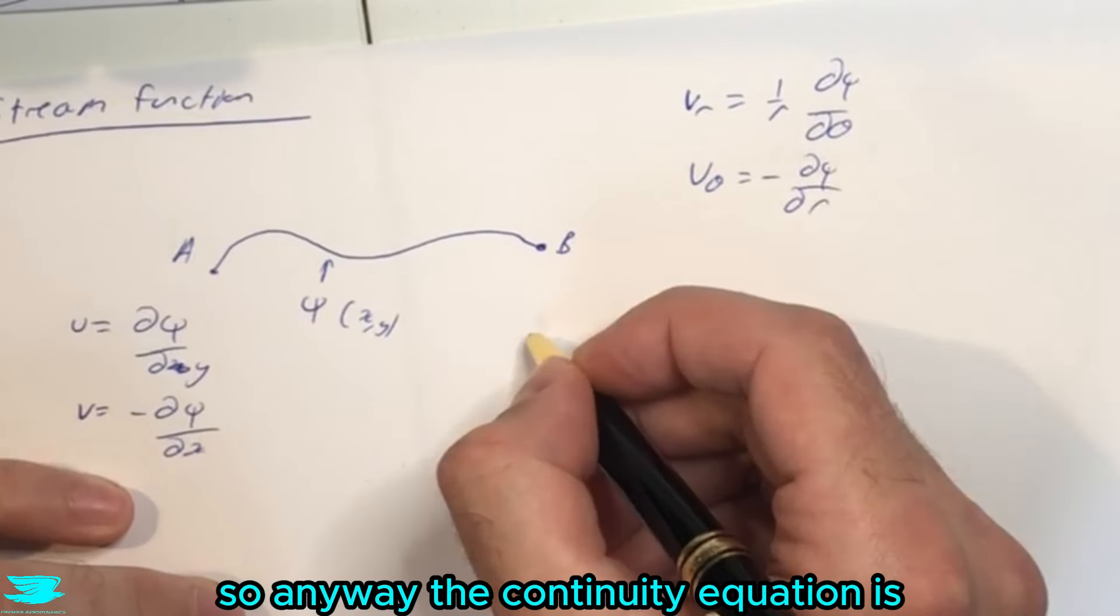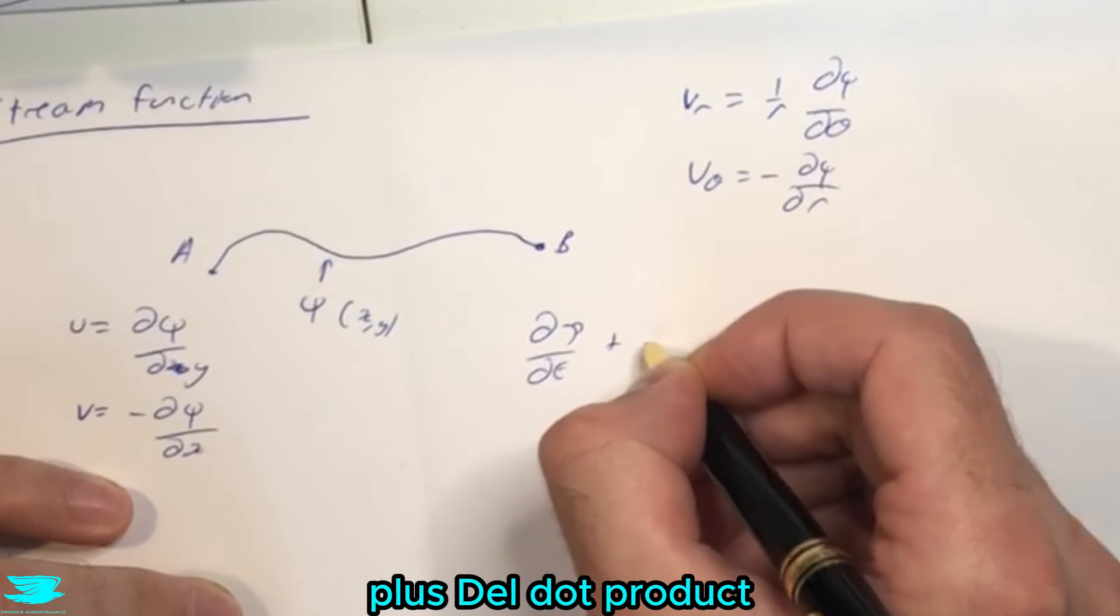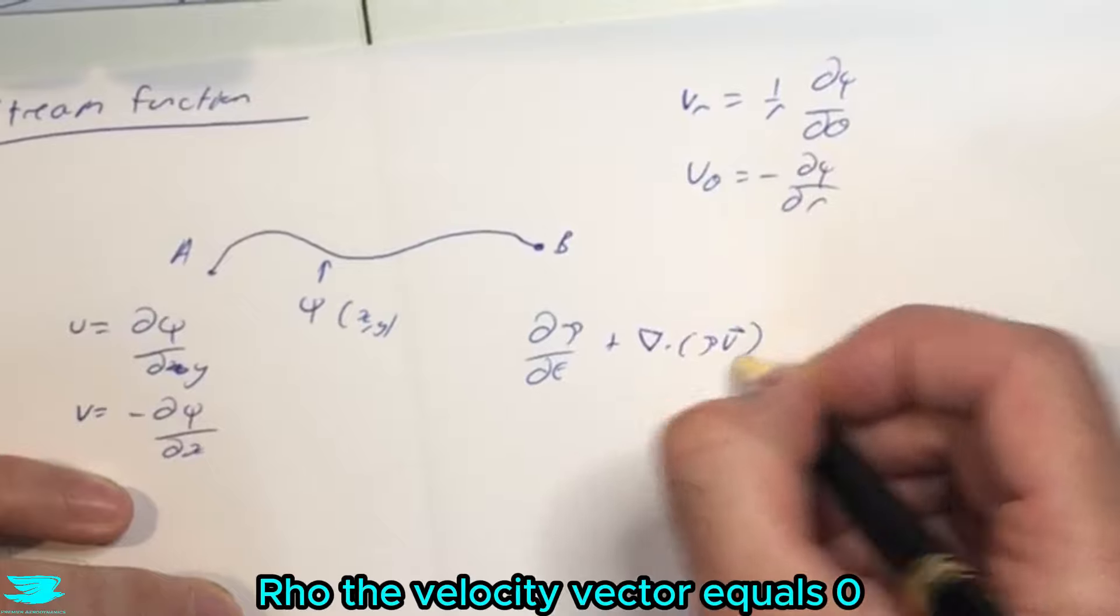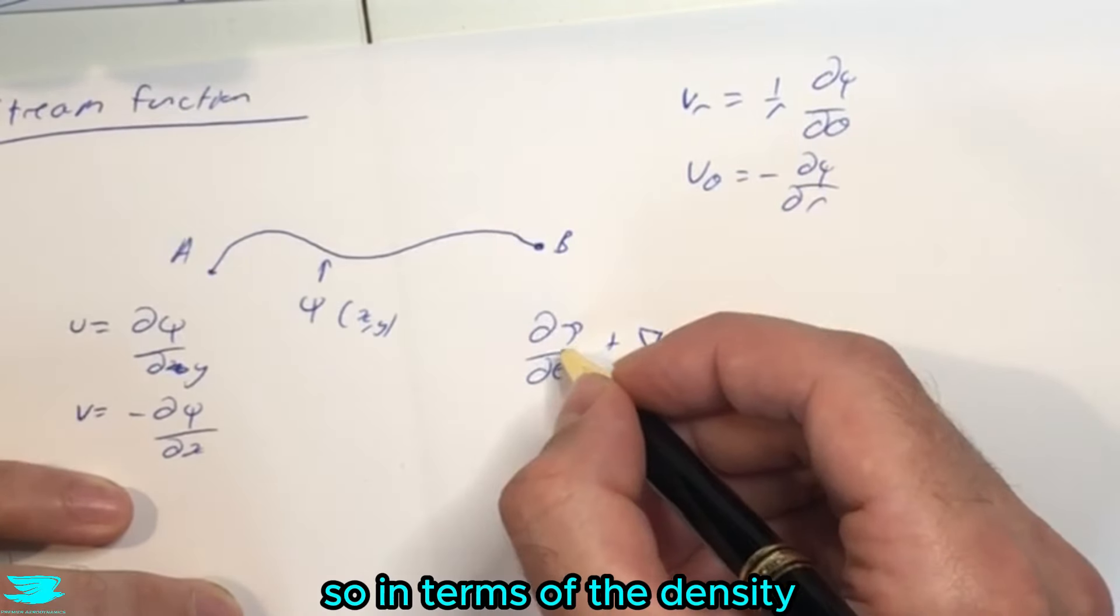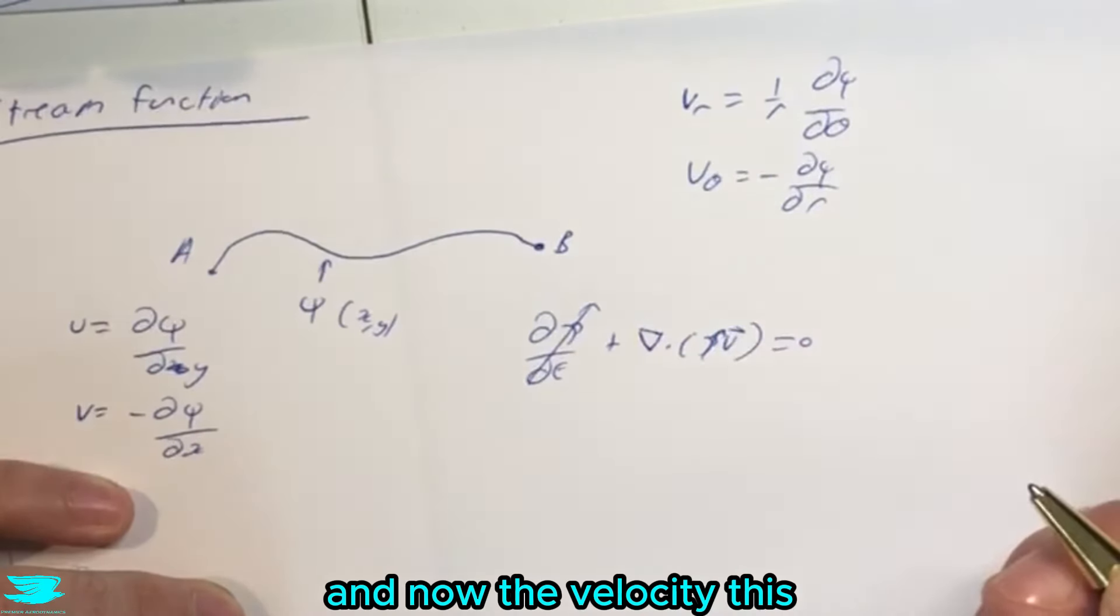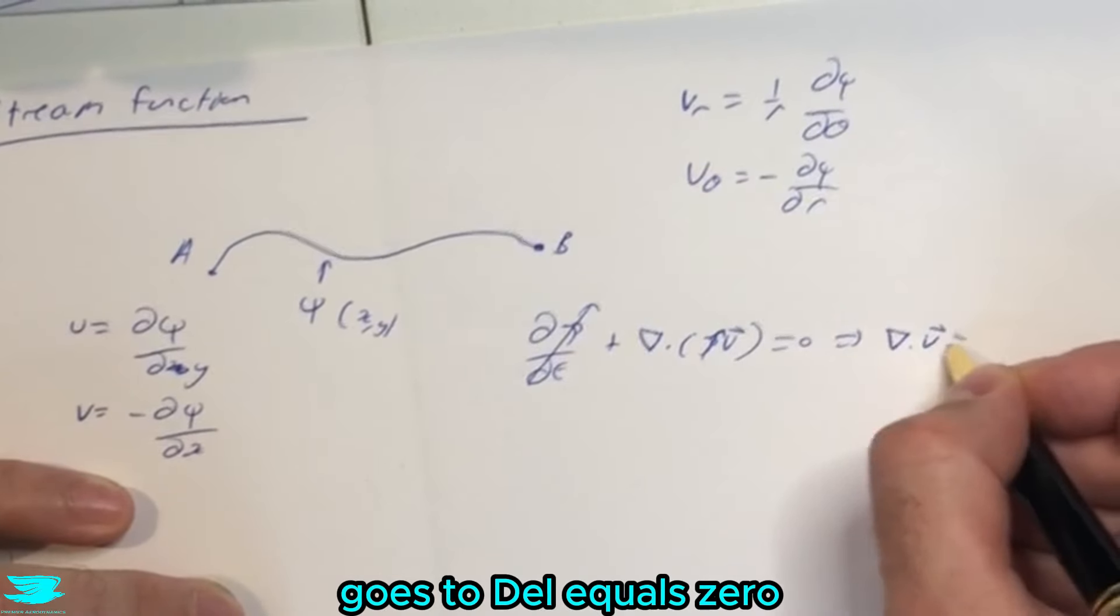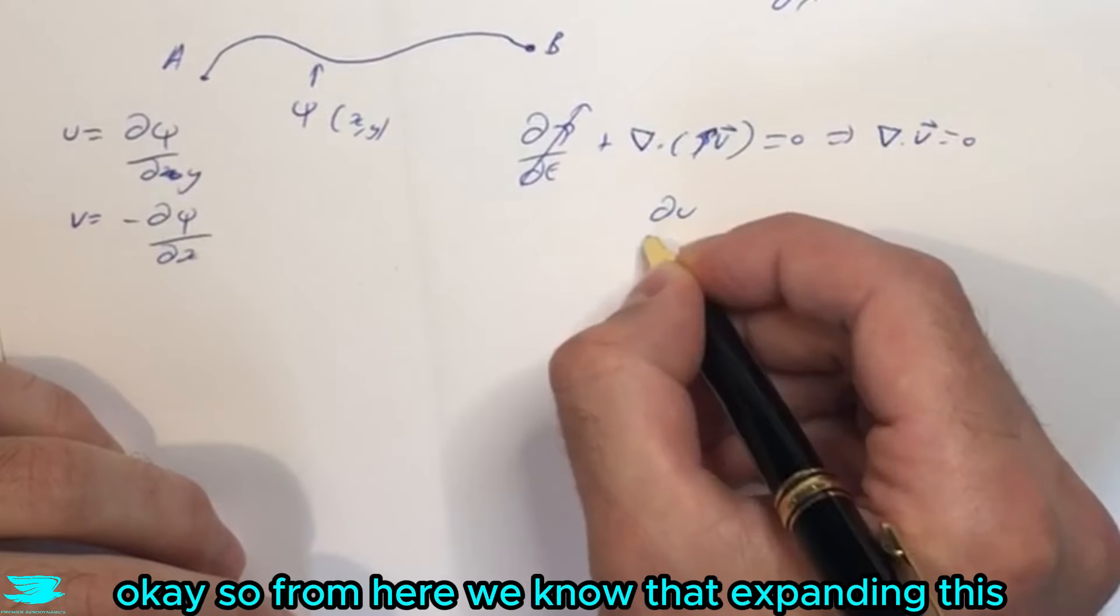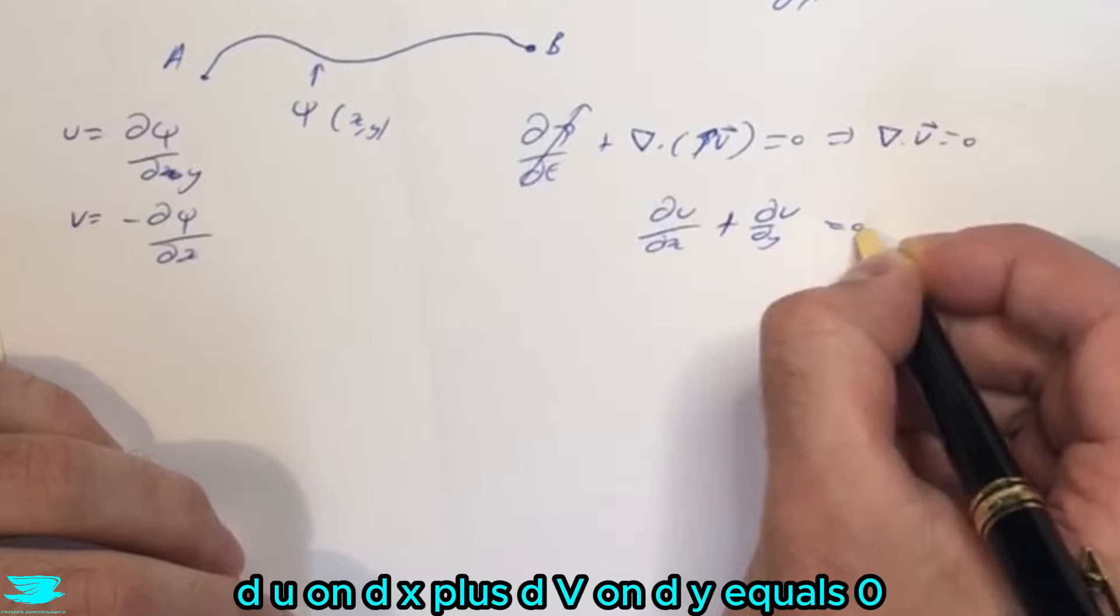So the continuity equation is the partial derivative of density with respect to time plus del dot product with the velocity vector equals zero. In terms of the density, well this is incompressible, so this goes to zero. And now the velocity, this goes to del dot v equals zero. So from here we know that expanding this, du on dx plus dv on dy equals zero.